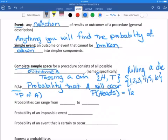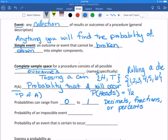So some things that we should know: probabilities can range from zero to one. So we can list them as decimals, fractions, or percents. And if it's percents, that would be from zero percent to one hundred percent.